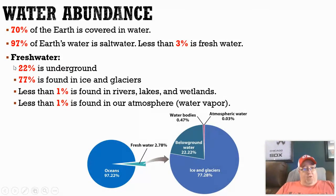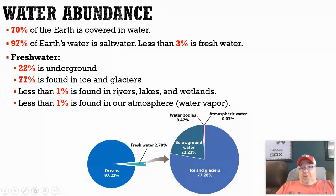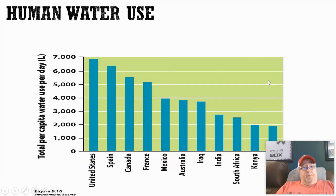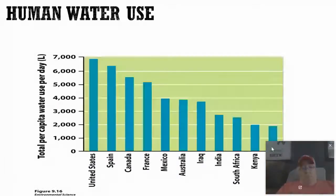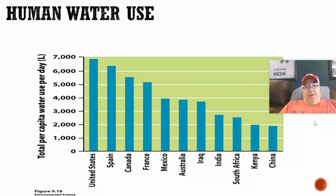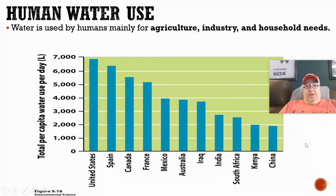So I want us to know these percentages: 3% of our water is fresh, and of that freshwater, where is it located on our planet? When we use water, we use it for a variety of different things, which we can break down into three general categories.